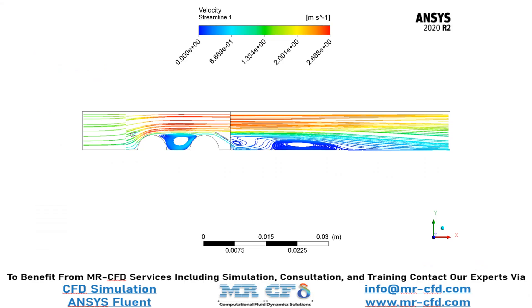In this slide, you can clearly see the streamlines of the airflow passing through our computational domain. You can also easily see the vortices generated inside our computational domain, which results in increasing the heat transfer rate.